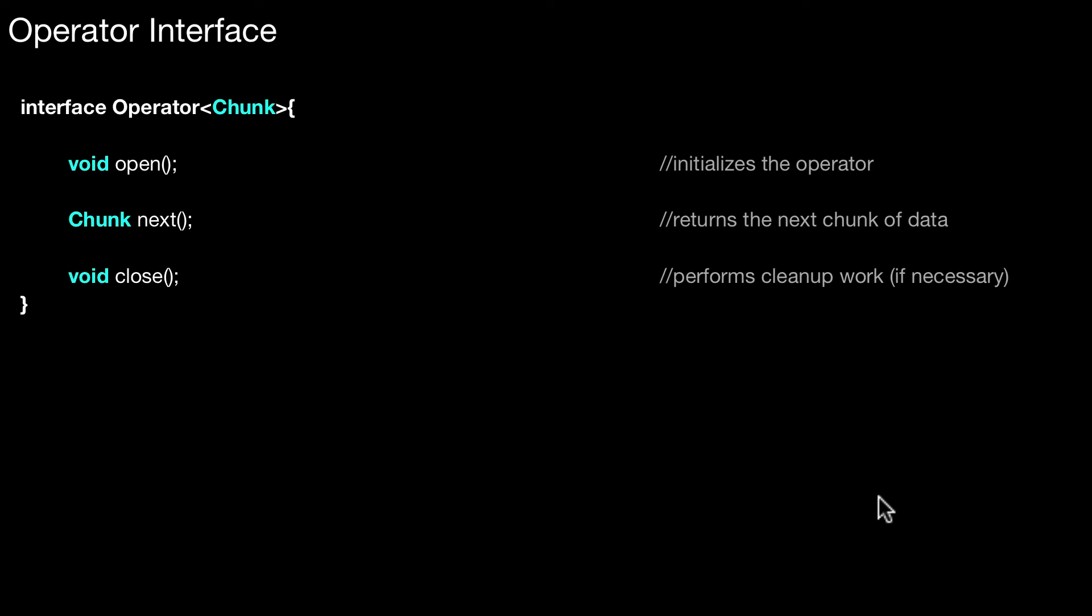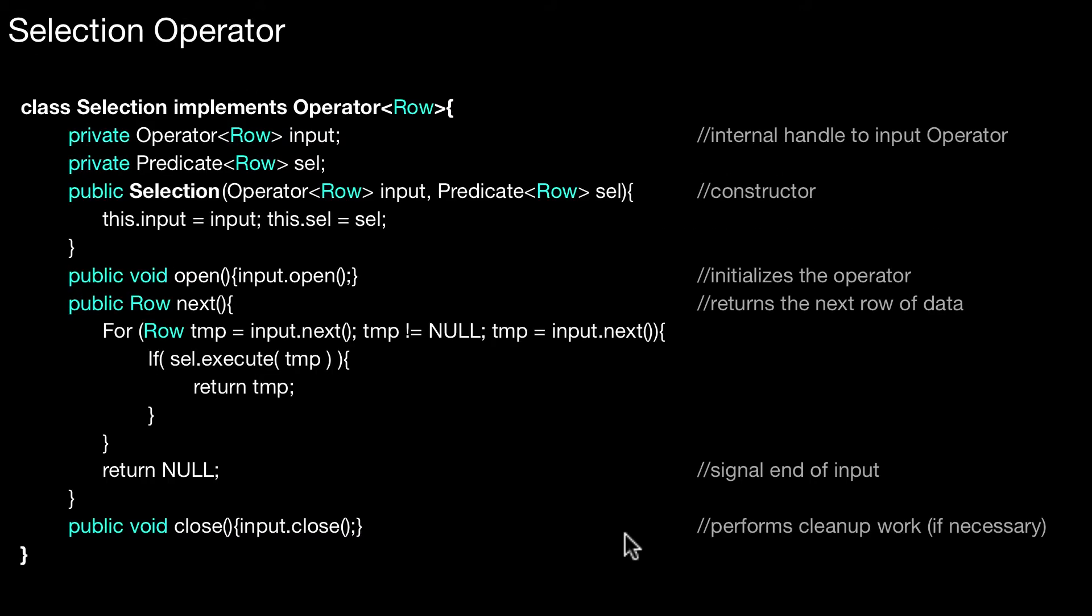In this video we will look at example implementations of the operator interface. We discussed this interface already in a previous video, so I assume you know about the principal idea. What are possible implementations? I will assume that the chunk, or the granule, is a row in the following. It doesn't have to be like that, but for these examples, I will assume this is a row.